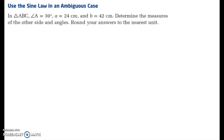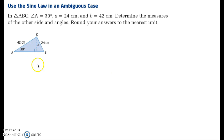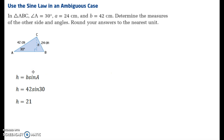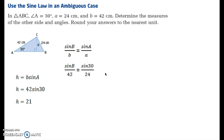Let's take a look at the example. We're given angle A equal to 30 degrees, side length A is 24, and B is 42. We want to determine the measures of all other sides and angles. First, we sketch the triangle — the height is shown dashed. We need to determine the height to figure out if there are zero, one, or two triangles. Taking H equal to B sine A, substituting B and sine A in, we find that H is equal to 21. From there we use the sine law: sine B over B equals sine A over A.